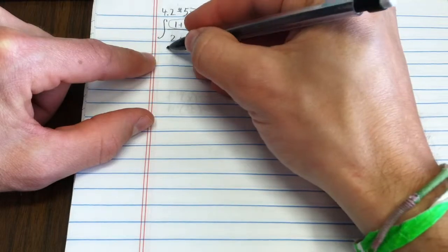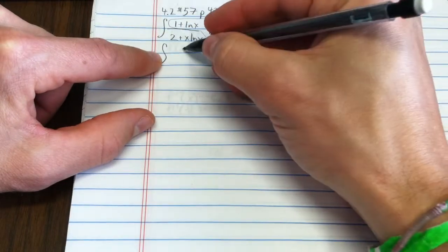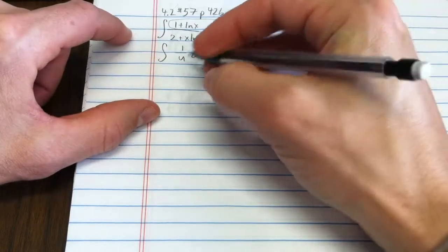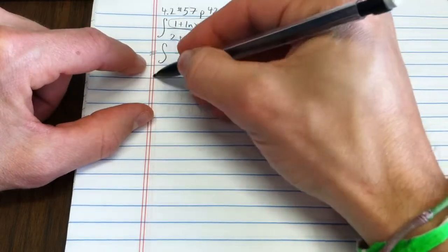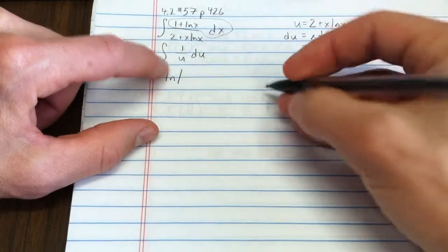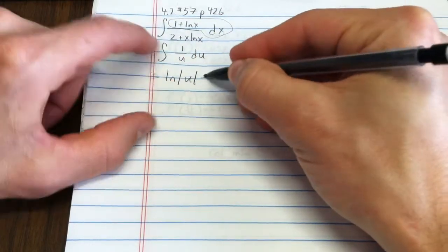And so this is going to be the integral of 1 over u du. Well, so what's the integral of 1 over u? That's the natural log of the absolute value of u plus c.